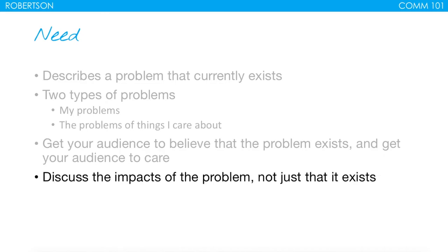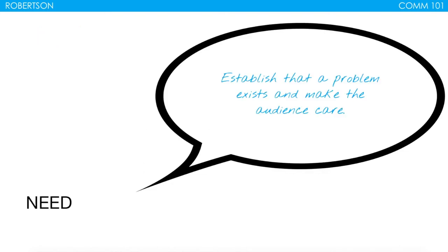You have to show that the problem exists and then take it a step further to show the impacts, to get them to care. Discuss the impacts of the problem, not just that it exists — you have to demonstrate that it has real impacts causing negativity, lack, or suffering. In the needs step, we establish that a problem exists and we make the audience care.